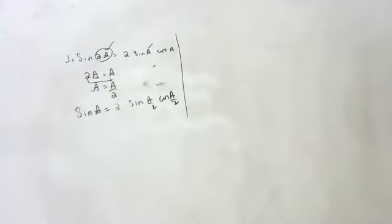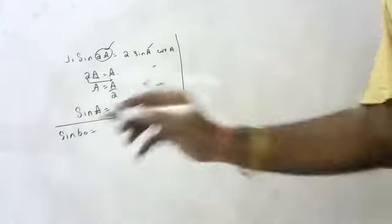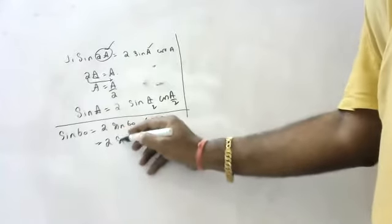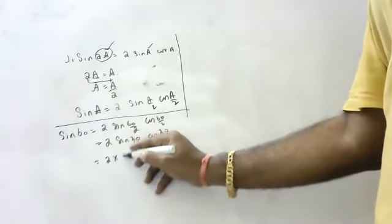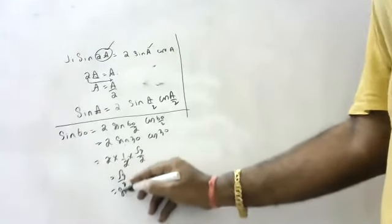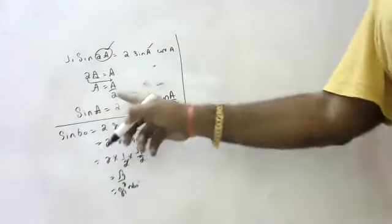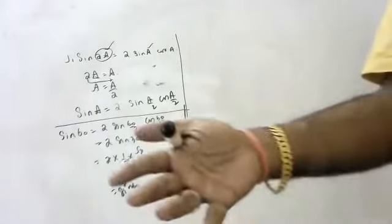Sin a is 2 sin(a/2) cos(a/2). This is the formula. Sin 2a is 2 sin a cos a, but sin a is 2 sin(a/2) cos(a/2). For example, suppose someone asks you sin 60. Sin 60 means 2 sin(60/2) cos(60/2), that is 2 sin 30 cos 30. We know sin 60 is √3/2. We get the same answer: 2 × (1/2) × (√3/2) = √3/2, which is sin 60. These formulas will be useful for doing numerical problems.